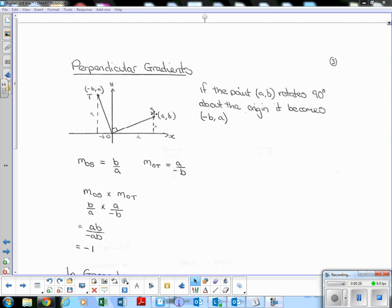So consider this diagram here, point S is A, B, A along B up. If we rotate this line through 90 degrees, imagine spinning around a quarter turn.